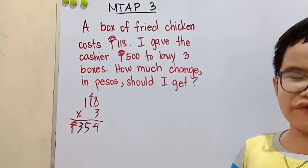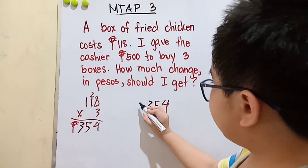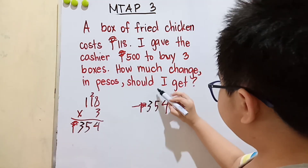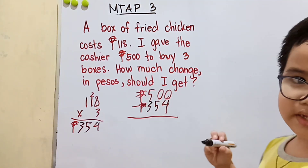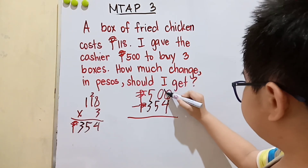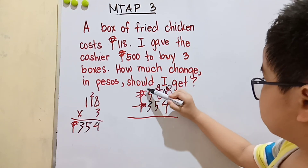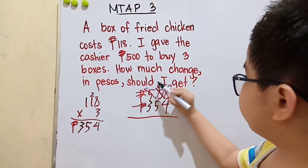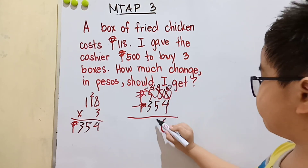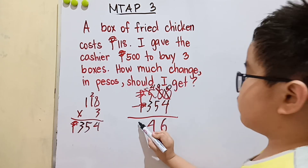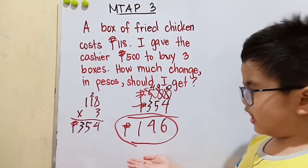In this problem, we are asked for my change. So we will subtract 354 pesos from 500 pesos. We cannot subtract 4 from 0, so 0 became 10 and this other 0 became 9, and the 5 became 4. 10 minus 4 is 6, 9 minus 5 is 4, 4 minus 3 is 1. So my change is 146 pesos.